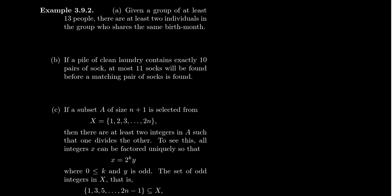If a pile of clean laundry contains exactly 10 pairs of socks, at most 11 socks will be found before a matching pair is found. Think of the 10 pairs of socks as your 10 pigeonholes. There are 20 socks total, so as you randomly draw socks from the laundry pile, those are your 20 pigeons. By the 11th pigeon, you're going to have to have a box containing two pigeons — so at most 11 socks would have to be drawn.